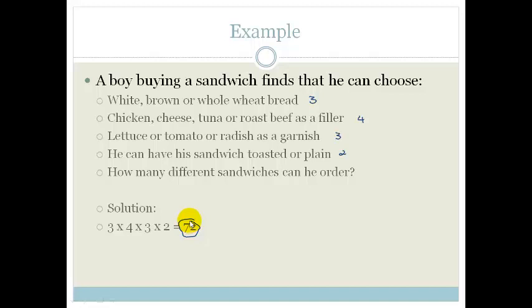So he could order 72 different sandwiches. And that's all that the theory was saying, that depending on the number of choices, we can find out how many different choices we can get all together. So just as an example, I could choose white and chicken and lettuce and toasted or I could choose white and cheese and lettuce and toasted or I could choose white and chicken and lettuce and plain. So that's how we get to our 72 choices.